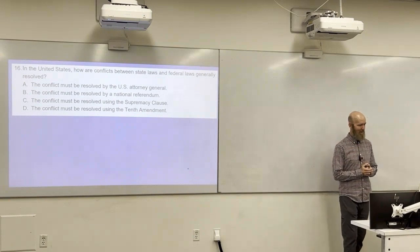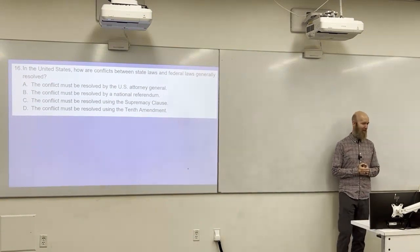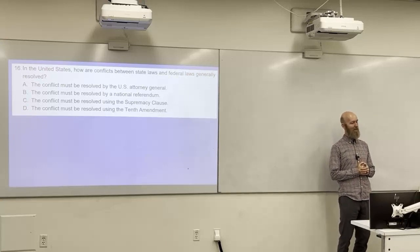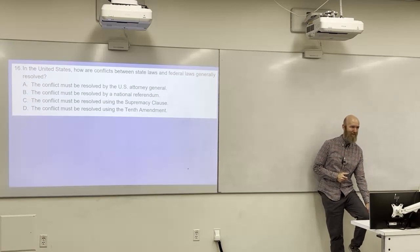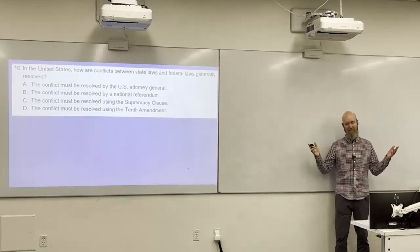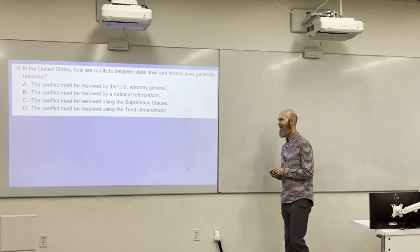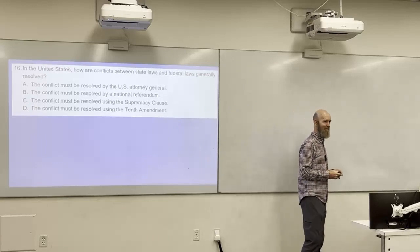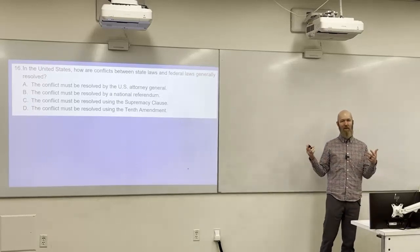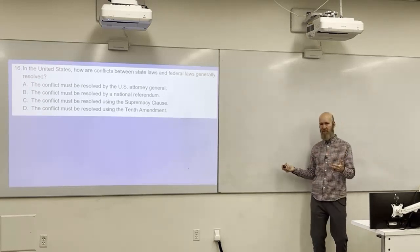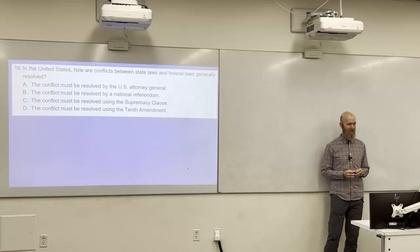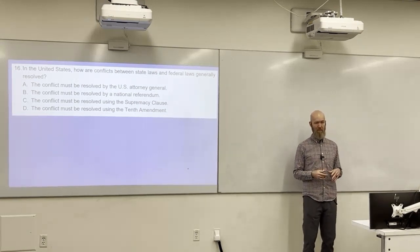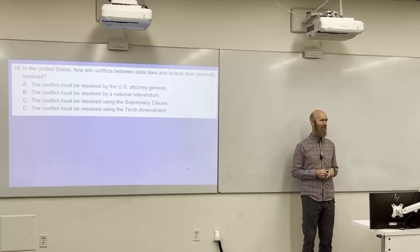In the United States, how are conflicts between state laws and federal laws generally resolved? A: by the U.S. Attorney General. B: by a national referendum. C: using the Supremacy Clause. D: using the Tenth Amendment. The answer is C — the Supremacy Clause says federal law takes priority over state law when there's a conflict. And if a law conflicts with the Constitution, the Constitution wins. The Constitution is the supreme law — the chief law of the land. They like to ask about that phrase.